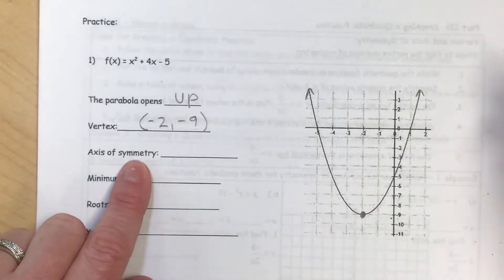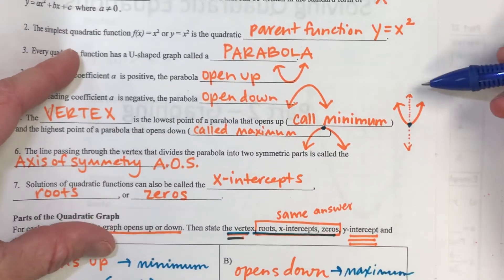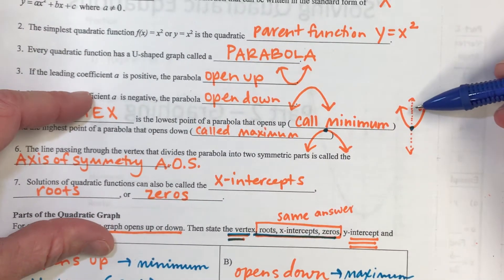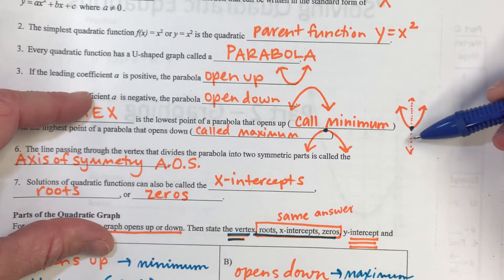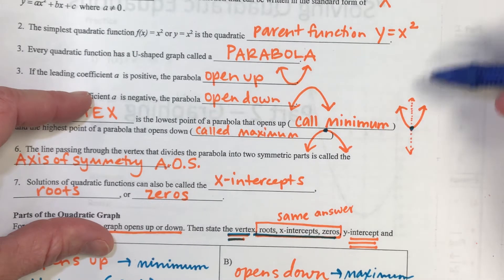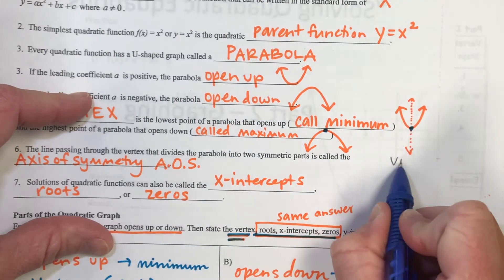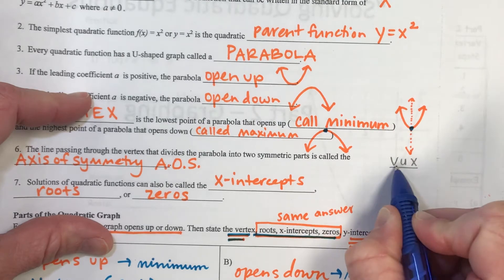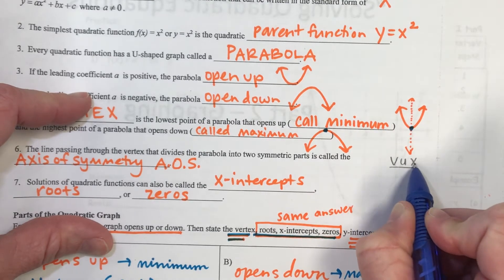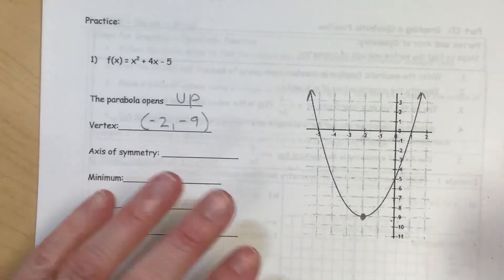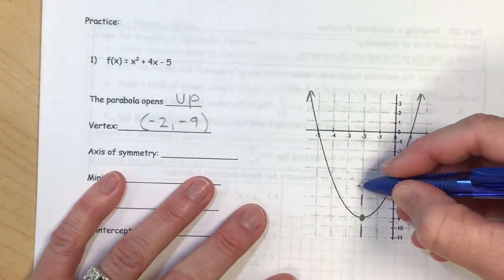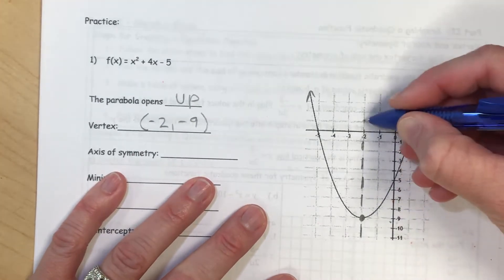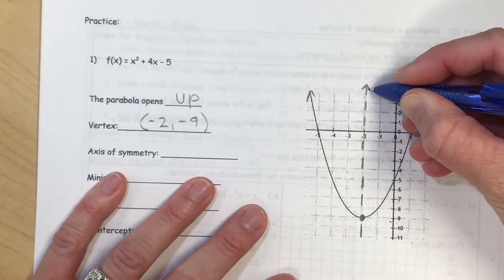And now our axis of symmetry. Axis of symmetry, based on our vocabulary video, is the vertical line that cuts your parabola exactly in half. And so if it's a vertical line, it's going to be VUX. So vertical line has undefined slope and the equation is x equal to a number.